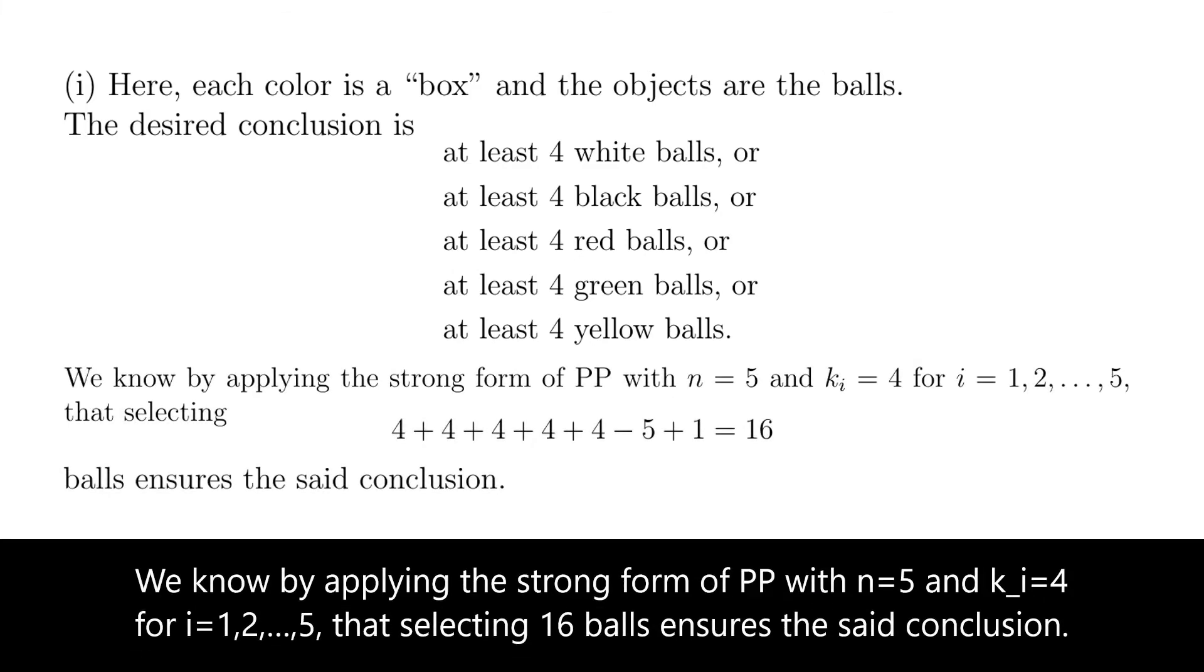We know by applying the strong form of pigeonhole principle, with n equals to 5 and ki equals to 4 for all i, that selecting 16 balls ensures the said conclusion.